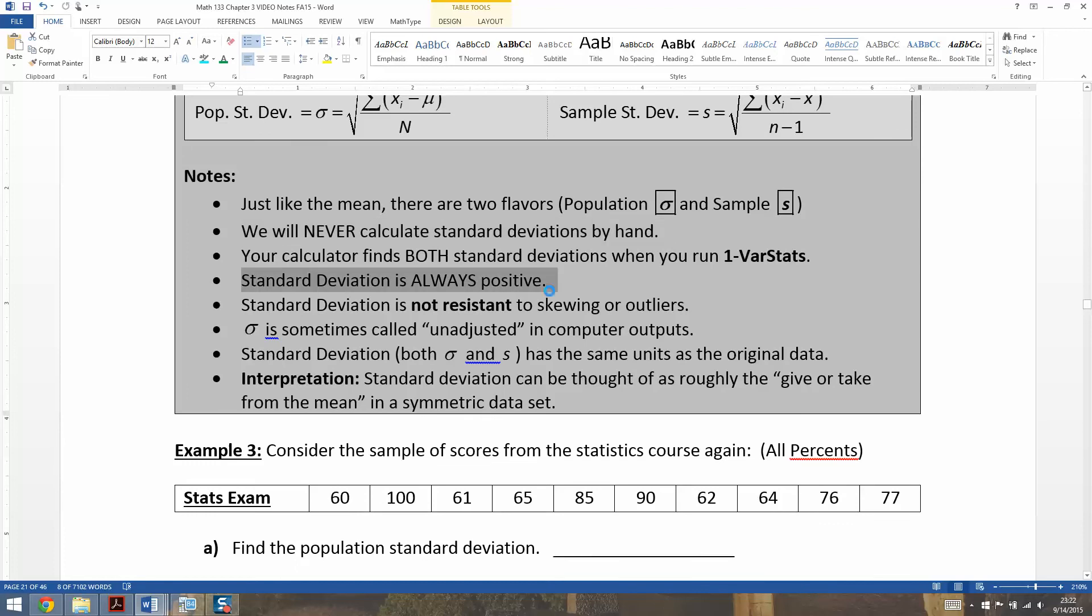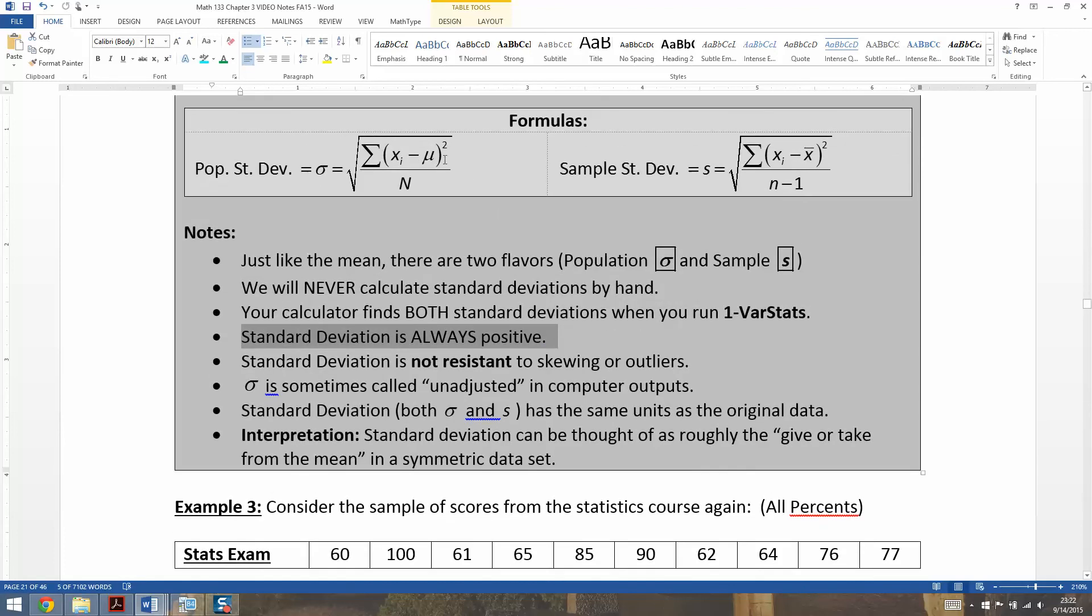And then the standard deviation is always positive, of course, because you squared it, so you turned all the deviations positive. Therefore, the whole thing is going to be positive. It's not resistant to outliers or skewing, skewed right, skewed left. It's not resistant to any of that, primarily because it's distance from the mean, but the mean was not resistant to outliers either. So the mean gets pulled towards the tail, so the standard deviation will get pulled larger if there are outliers or if it's skewed.